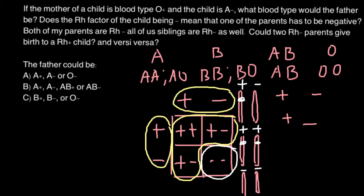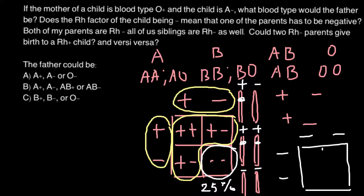So this answers one of our questions: could Rh positive parents produce an Rh negative child? Yes, they can. As you can see on the Punnett square, this happens in 25% of the progeny. But could two Rh negative parents produce progeny who is Rh positive? As you can see, this is not possible. Two Rh negative parents would produce only Rh negative children.